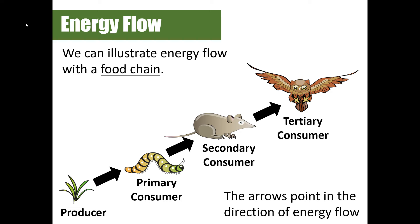There are different ways to illustrate energy flow in an ecosystem. One simple way is with a food chain. In a food chain, the arrow points in the direction of energy flow. You can see how the energy moves from the producer to the primary consumer, from the primary consumer to the secondary consumer, and from the secondary consumer to the tertiary consumer.